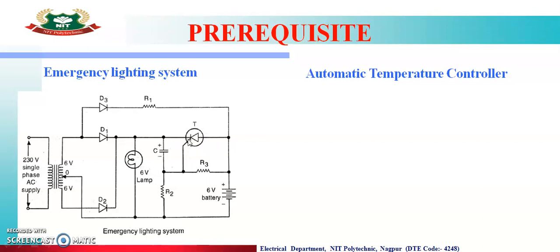तो SCR forward bias हो जाएगा जब AC supply off होगा, और R3 के through T को gate current मिलेगा और SCR on हो जाएगा। जैसे SCR on हो गया तो battery का voltage lamp के across appear हो जाएगा। मतलब जब तक AC supply on रहेगा तब तक lamp को rectifier के through voltage मिलेगा, और जब AC supply off हो जाएगा तो battery के through SCR on होके lamp को supply मिलेगा। Therefore it is known as emergency lighting system.